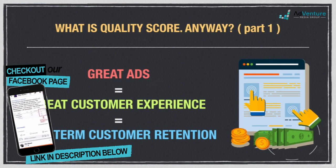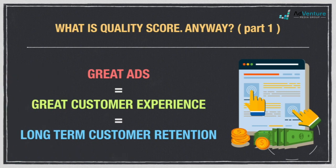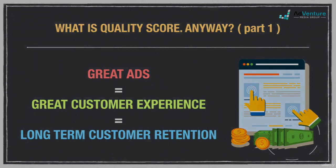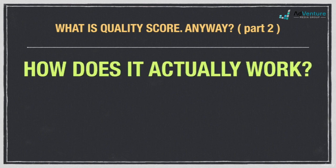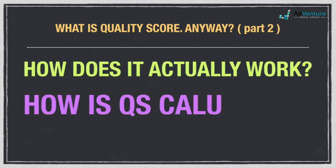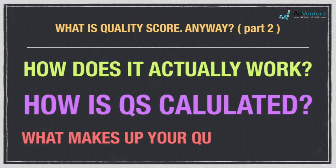So AdWords quality scores, stripped of any technical jargon, is Google's way of ensuring that their customers have the same high quality referral experience with a paid ad as they do with an organic result. Now that we understand what quality score aims to do at a conceptual level, let's take a closer look at how quality score actually works, how it's calculated, and what it's comprised of.